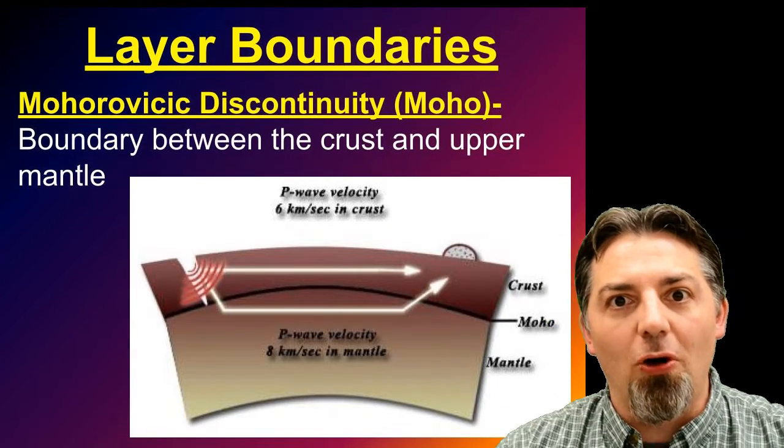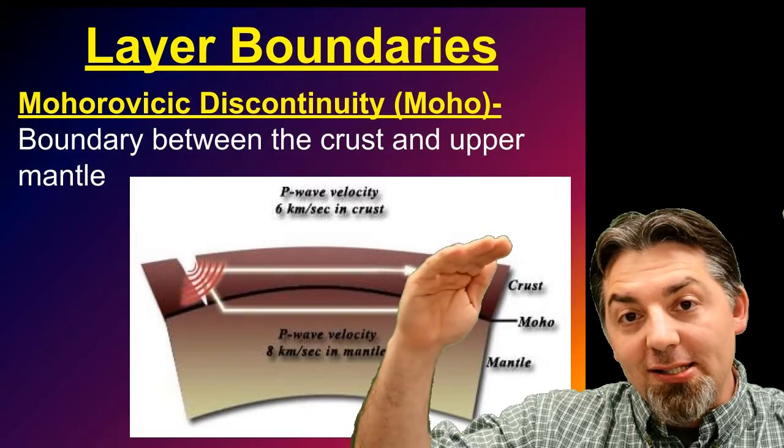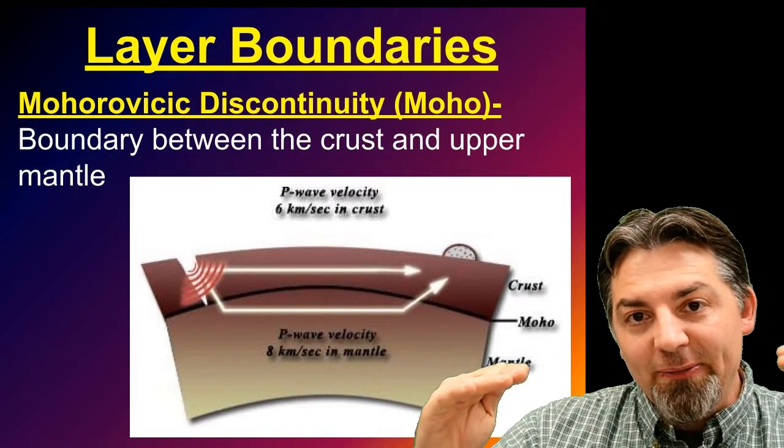That's a fun one to say. Mohorovicic discontinuity. That's the boundary line between the crust and the upper part of the mantle.